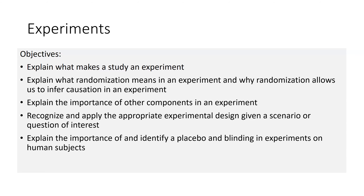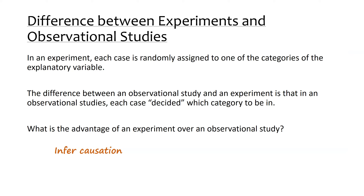First, we need to establish major differences between experiments and observational studies. In an experiment, each case or individual is randomly assigned to one of the categories of the explanatory variable. In experiments, this explanatory variable is usually called a factor. The factor has treatments or levels. Essentially, a factor is something I believe is going to cause changes in my response variable, and it has some levels — maybe three different levels of water affecting plant growth.